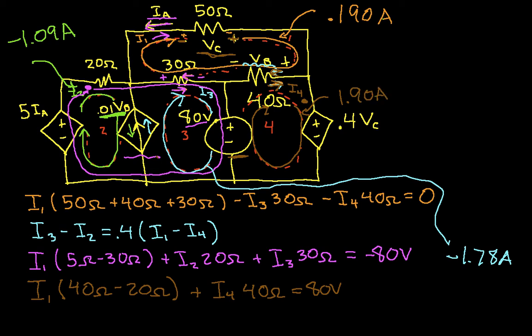So there you have it. That gives us all of our mesh currents. And now we can go back and figure out what other voltages and currents in the circuit are. So for example, if we wanted to know what I sub A is, we know that I sub A is the negative of I1, so that would be minus 0.190 amps.